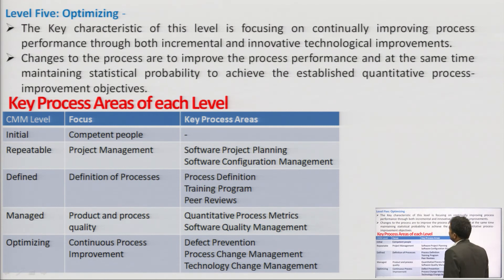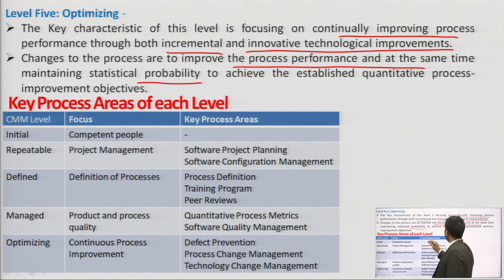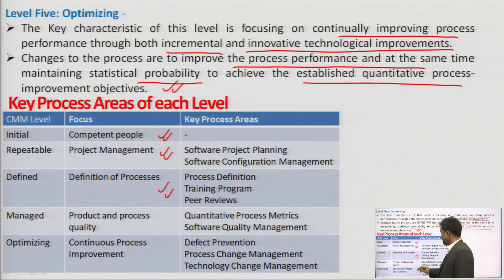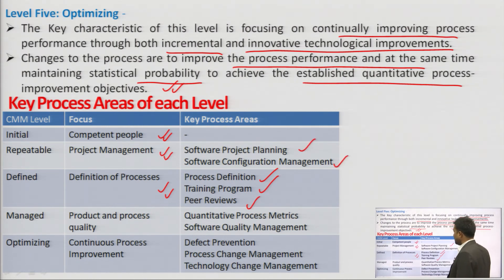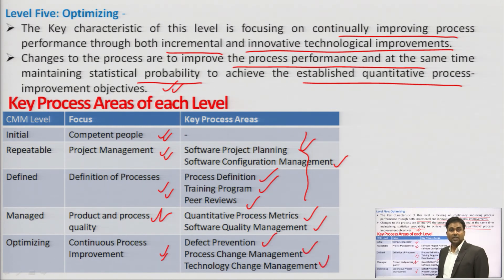Level 5 is Optimizing — the key characteristic is focusing on continuous process improvement through both incremental and innovative technology improvements. Changes to the process improve process performance, with statistical probability used for achieving established quantitative objectives. From level 1 onward, each level adds: level 2 adds project management and repeatability; level 3 adds defined processes, training programs, and peer reviews; level 4 adds quantitative process management and software quality management; level 5 adds continuous process improvement, defect prevention, and process change management.